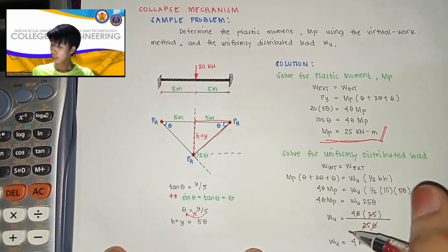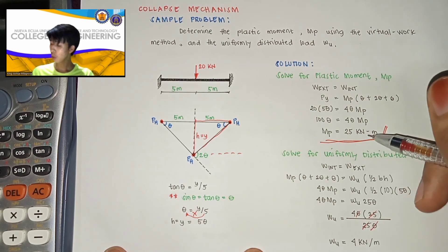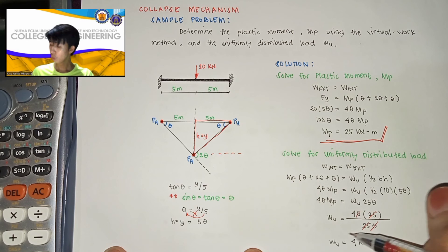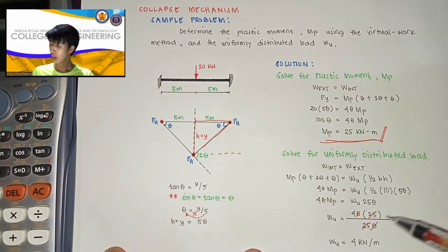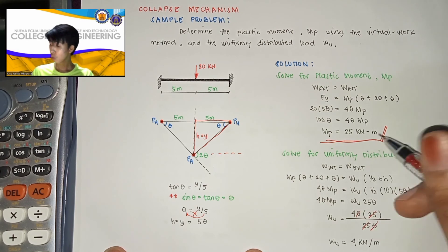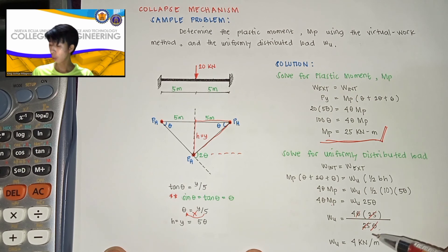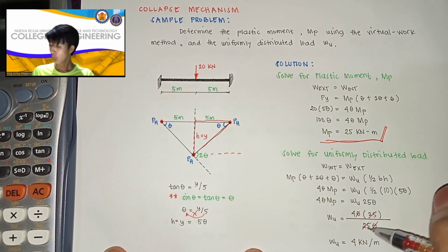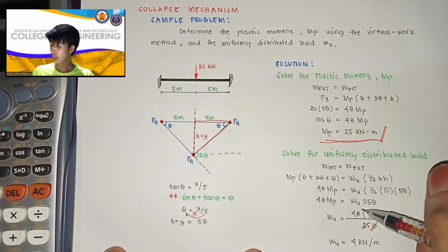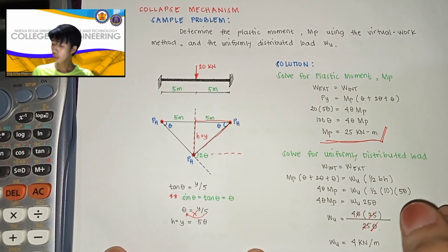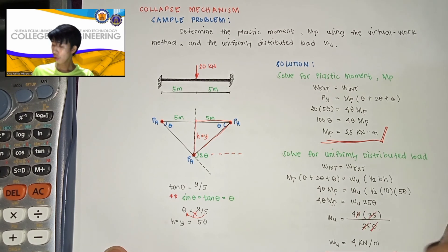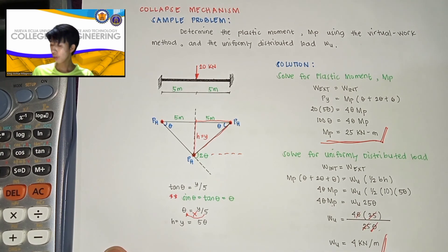By substituting 25 kN to MP, yung makukuha natin wu is equal na yan sa 4 theta times 25 kN-m all over 25 theta. So cancel out na itong 25 and then yung theta,